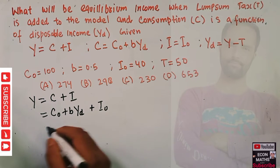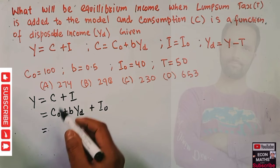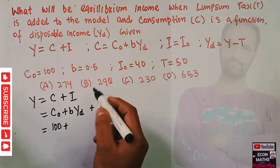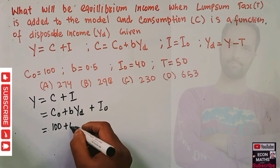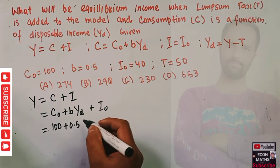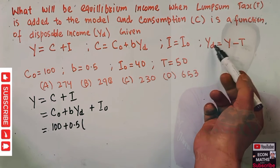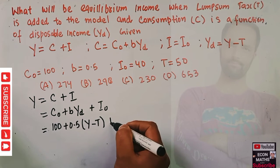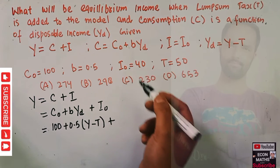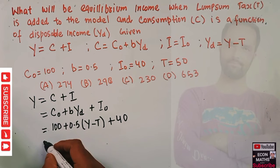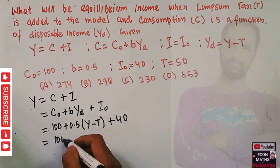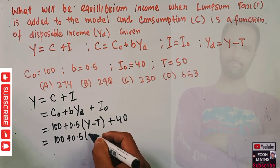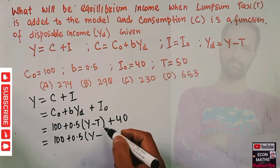When we solve, C naught is given as 100, plus the value of b, marginal propensity to consume, is 0.5, and disposable income is Y minus T. So I can write 100 plus 0.5 times (Y minus T) plus I naught, where autonomous investment is 40.